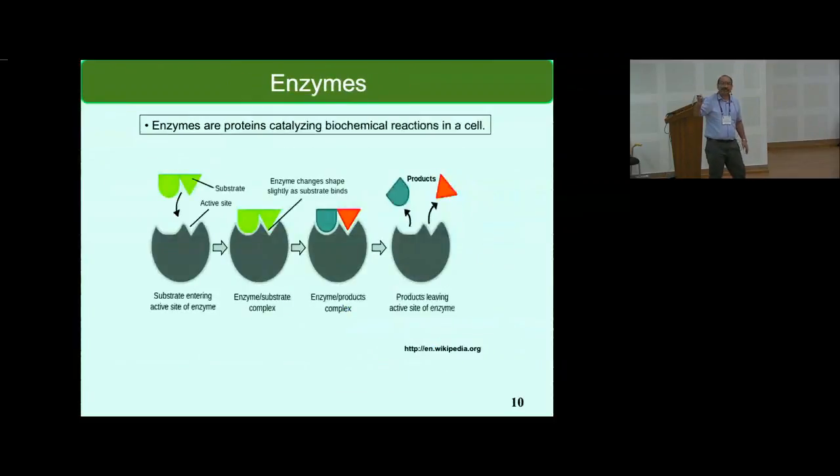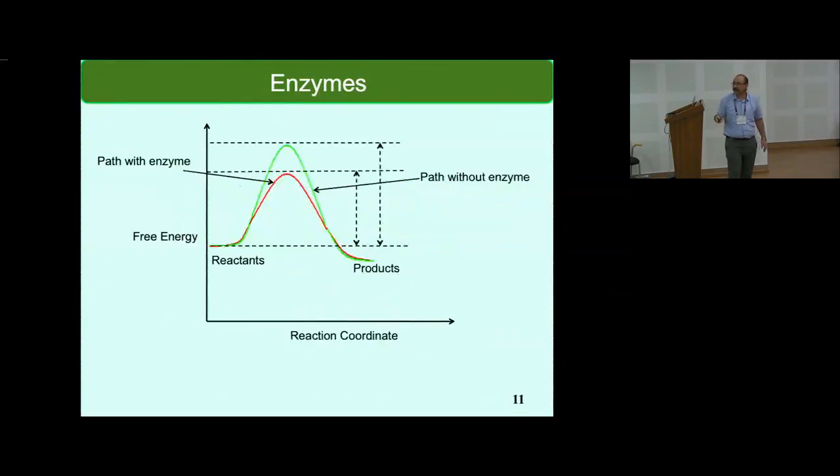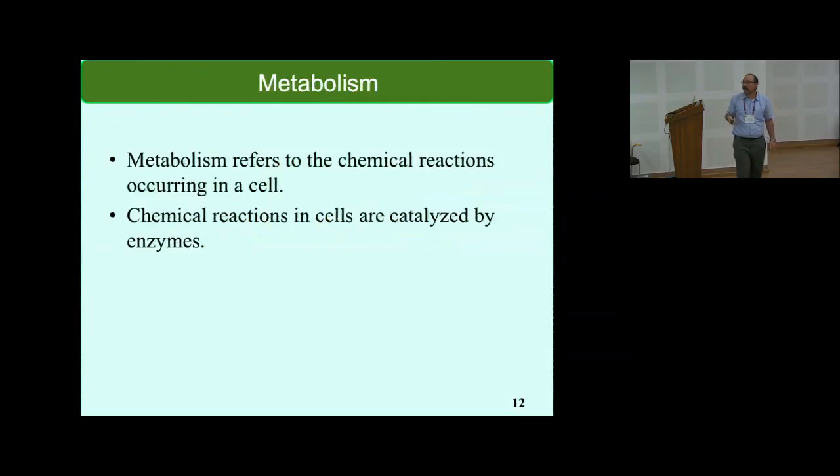Enzymes are proteins that catalyze metabolic reactions. There is an active site where the substrate binds, then there is a reaction and the products are formed and separate from the enzyme. Enzyme basically lowers the energy threshold and provides an alternative path for metabolic reactions to happen. Metabolism is the sum total of all the chemical reactions inside a cell and they are catalyzed by enzymes.